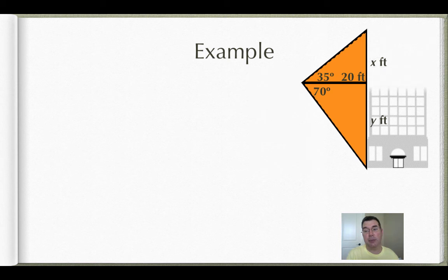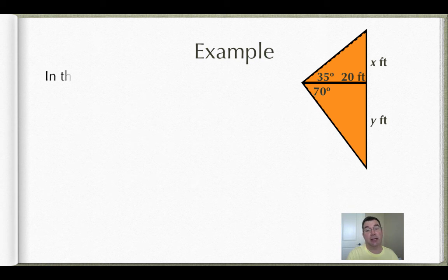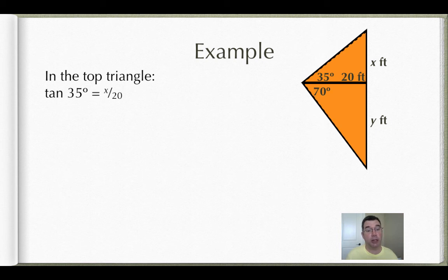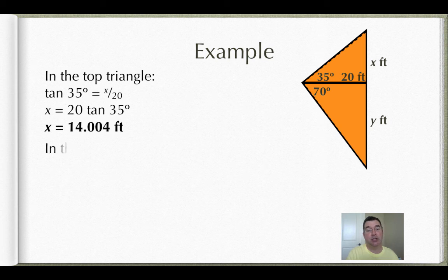I'm going to call the opposite of the top triangle x, and I'm going to call the opposite of the bottom triangle y, and I'm going to add those together to get the total height. So in that top triangle, I have the opposite and the adjacent that I'm working with, so that's tangent. The tangent of 35 is going to be the opposite x over the adjacent 20. Cross multiply, and I get that x is equal to 20 times the tangent of 35, which is 14.004 feet.